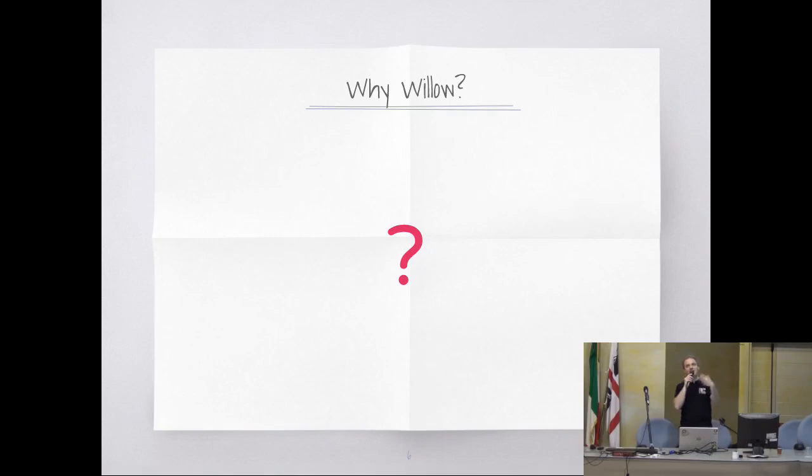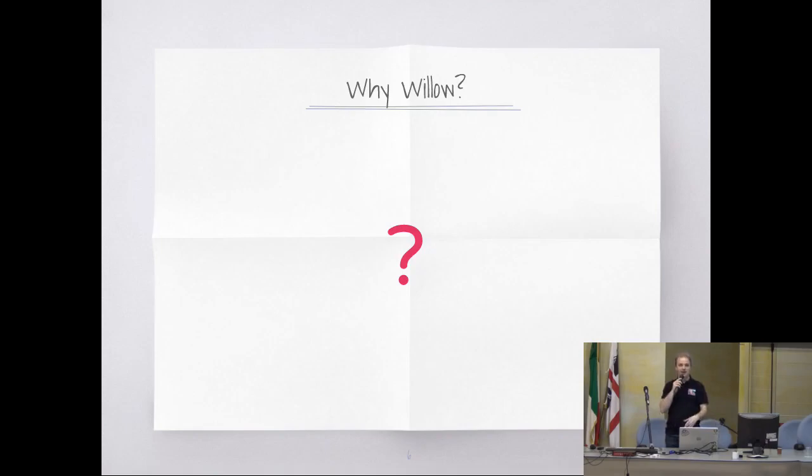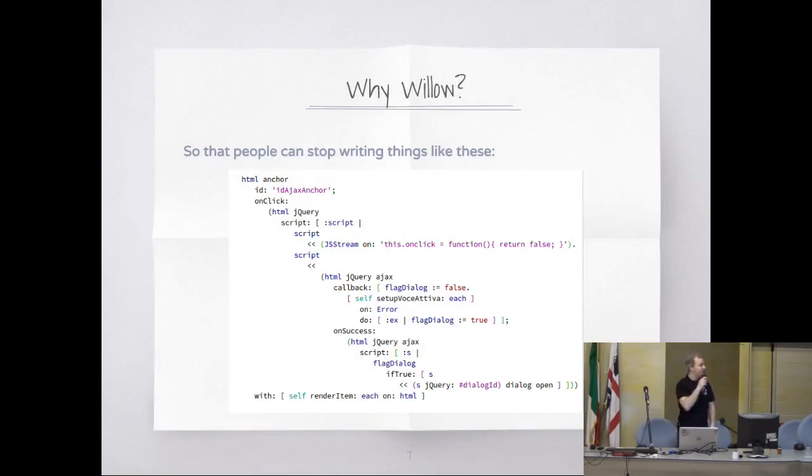Or, for example, the user tends to copy the URL, and it has the session key, so you pass it to another user and it confuses everyone. So we started using a lot more AJAX-based code and rendering only parts of the document model.